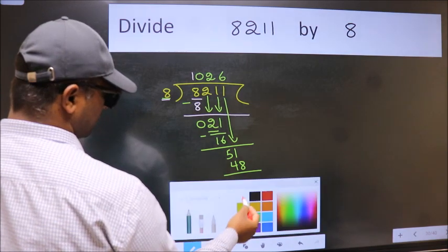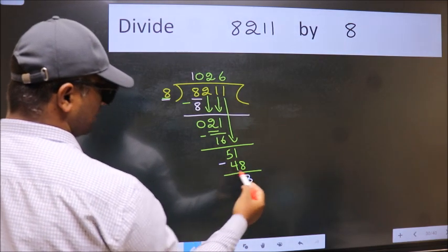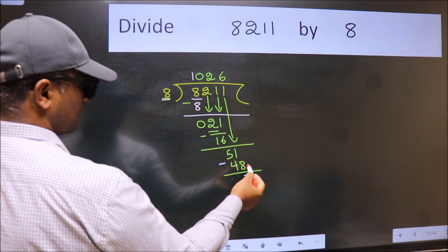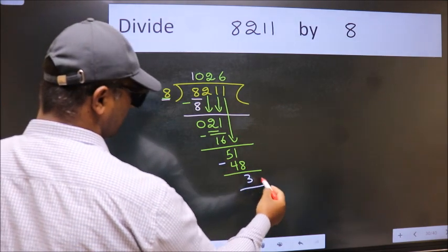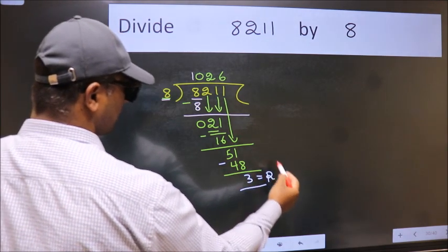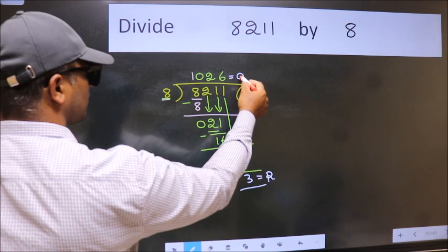Now, we subtract. We get 3. No more numbers to bring it down. So, we stop here. This is our remainder and this is our quotient.